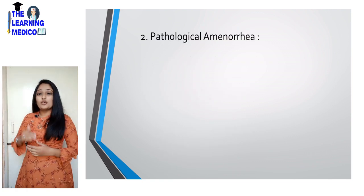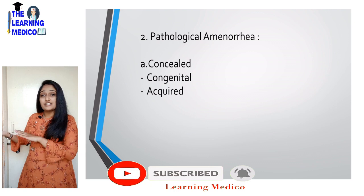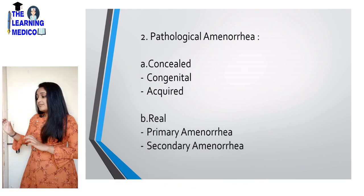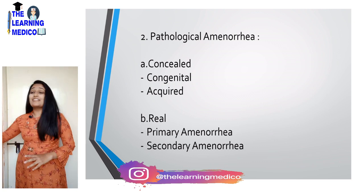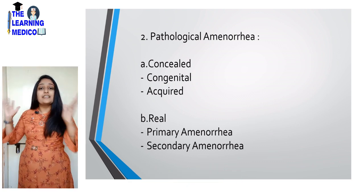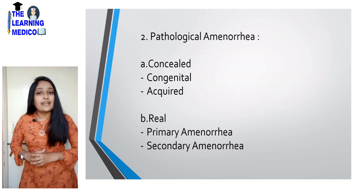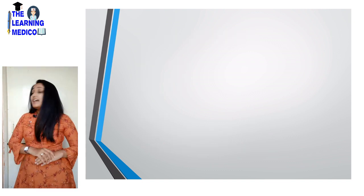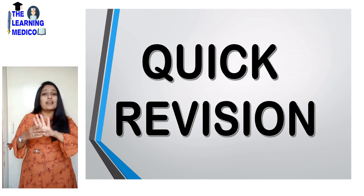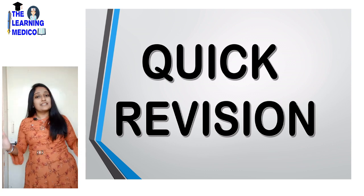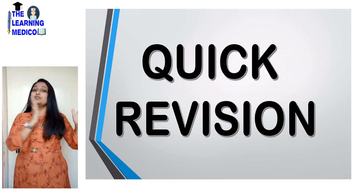The second type is pathological amenorrhea. There are two subtypes: concealed, which can be congenital or acquired, and real amenorrhea, which is further divided into primary amenorrhea and secondary amenorrhea. We will see detailed videos on primary amenorrhea and secondary amenorrhea in pathological amenorrhea separately.